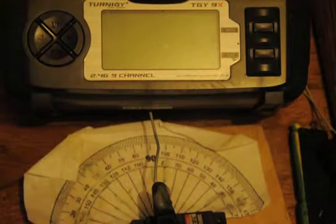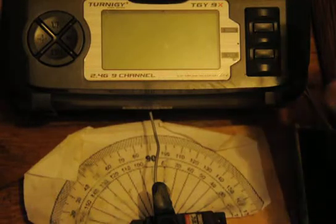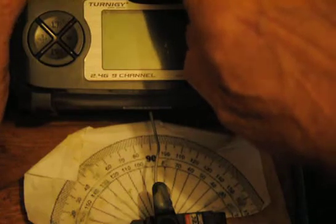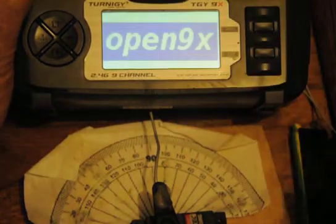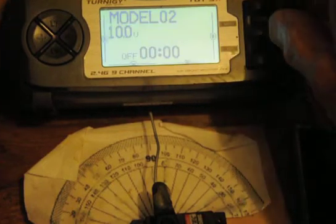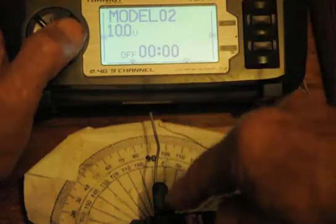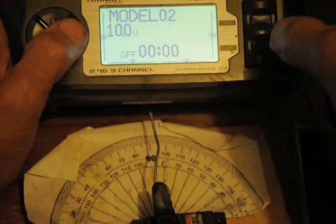This is a Turnigy 9X fitted with Open 9X software and FrSky module. I'm going to try and set the throttle and torque at the same time. I'll switch it on. Receiver's on. No throttle and the throttle at half. The servo is plugged into the throttle channel and it's showing half throttle.